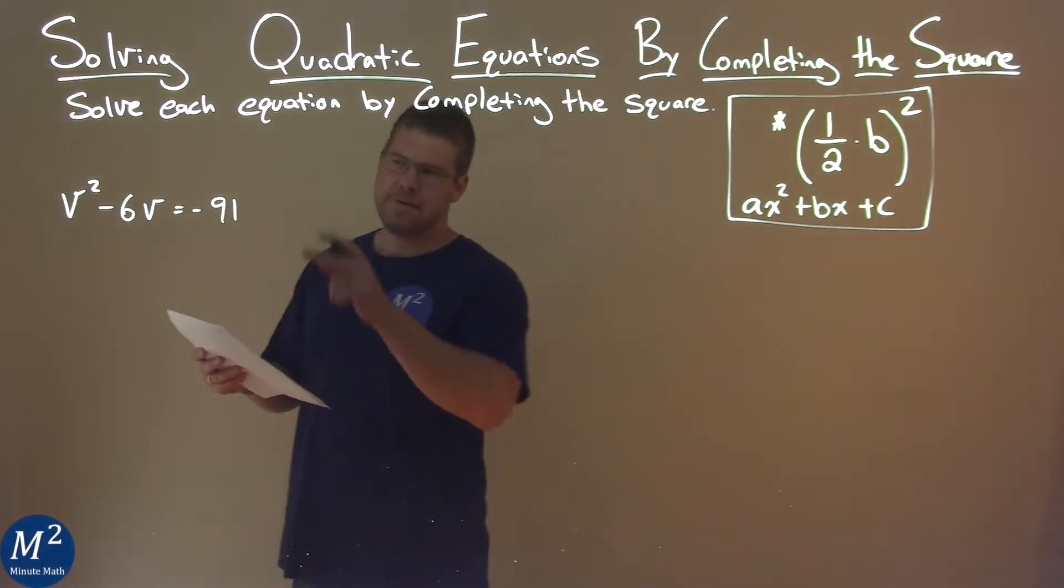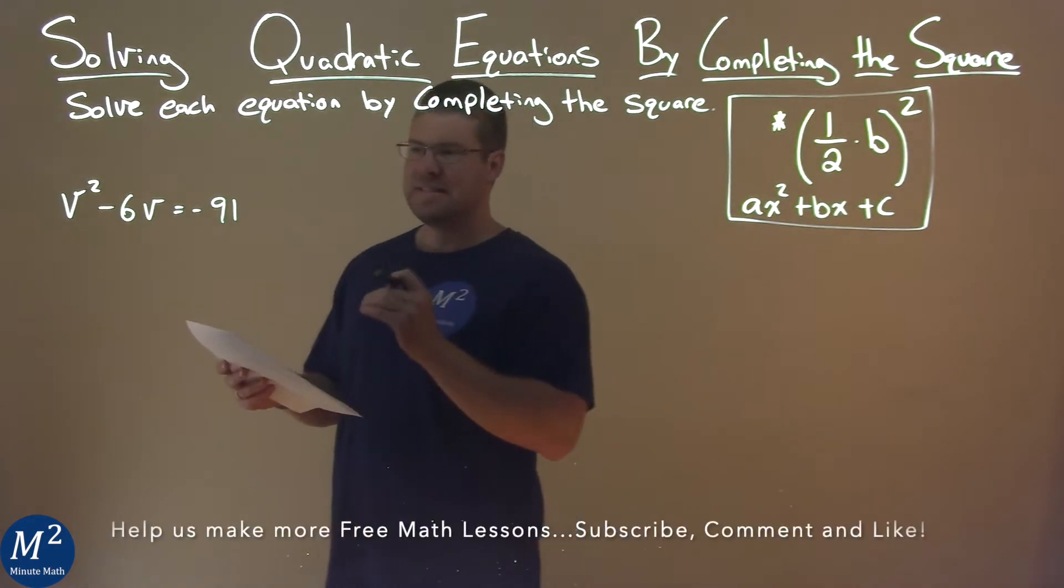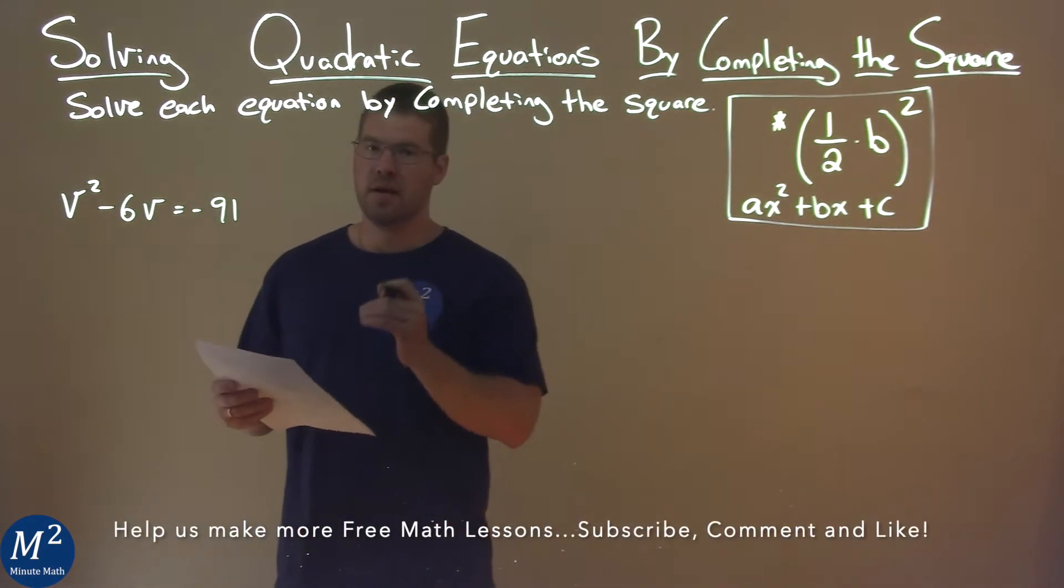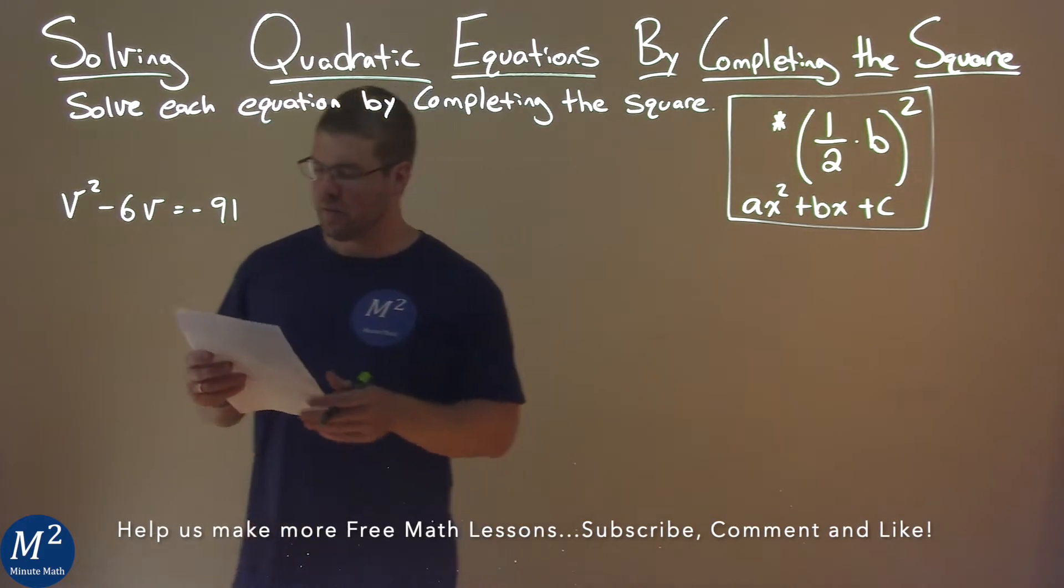We're given this problem right here, v squared minus 6v equals negative 91 and we need to solve this by completing the square.